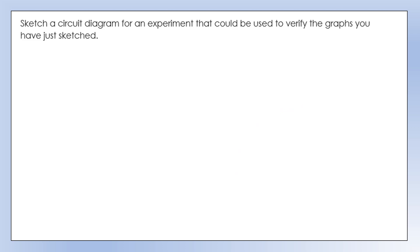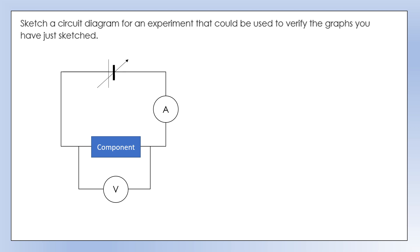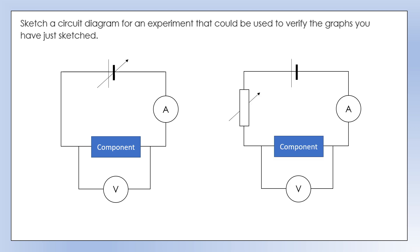To verify those I-V graphs experimentally, there are two approaches. First, use a circuit with a variable power source, which allows you to change the potential difference across the component and measure the current through it. Alternatively, use a fixed power source with a variable resistor in series — this also allows you to vary the potential difference and observe its effect on the current, enabling you to plot an I-V graph and characterise the component's behaviour.